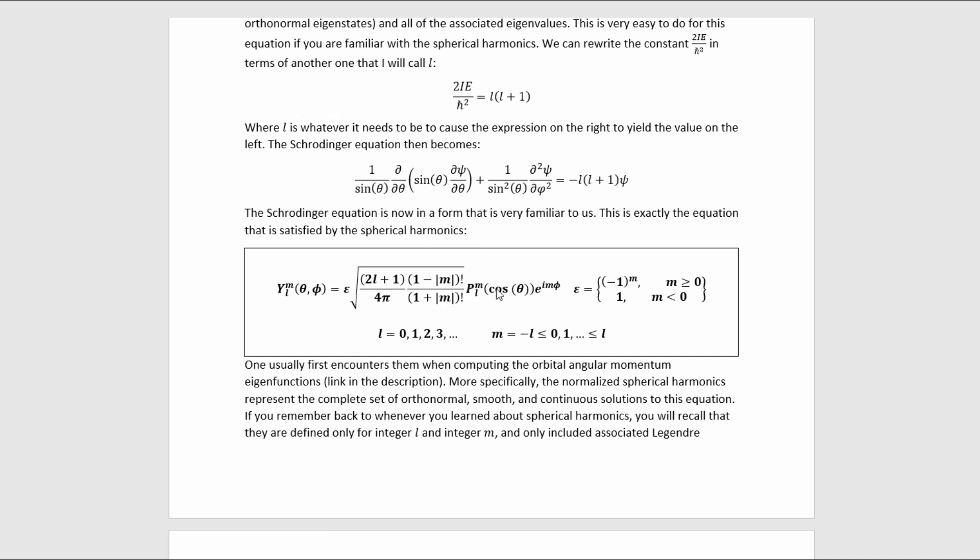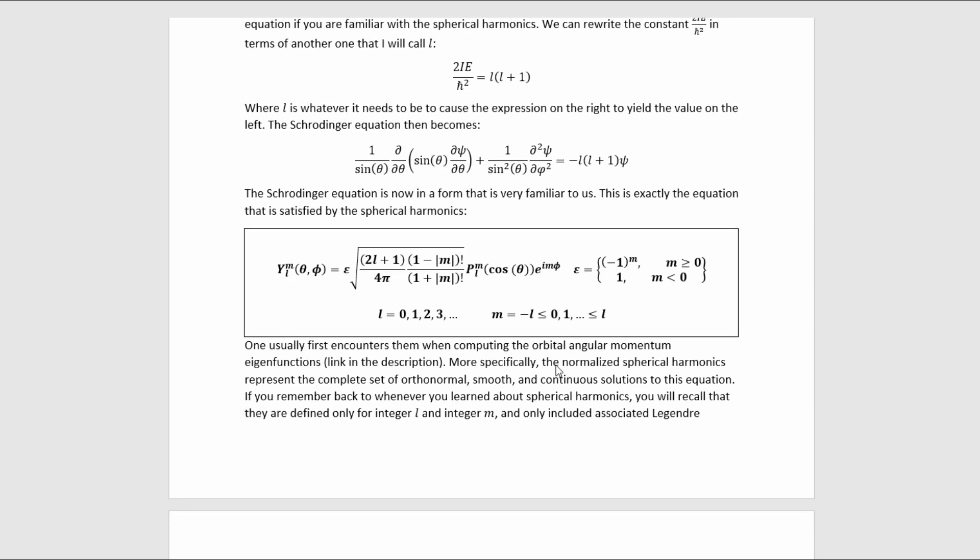If you're not familiar, these are the associated Legendre polynomials of cosine theta. The formulas are readily available, you can look them up. And also you can see them in other videos of mine. One usually first encounters these spherical harmonics when computing the orbital angular momentum eigenfunctions. In the description, there's a link to a video where I show how to do that. And in fact, that's one of the videos where I give the formulas for these associated Legendre polynomials.